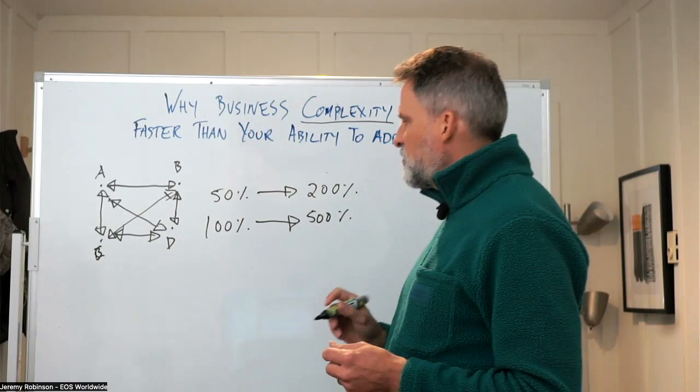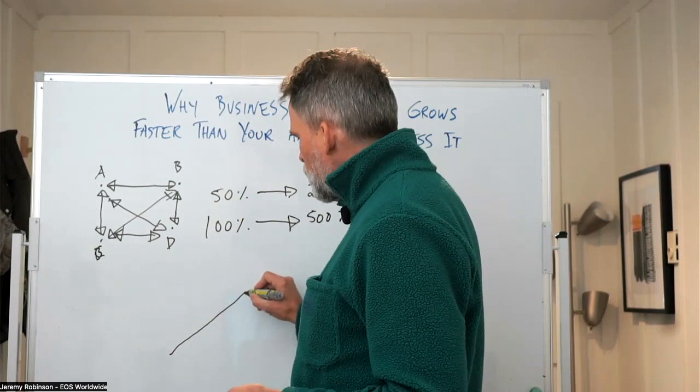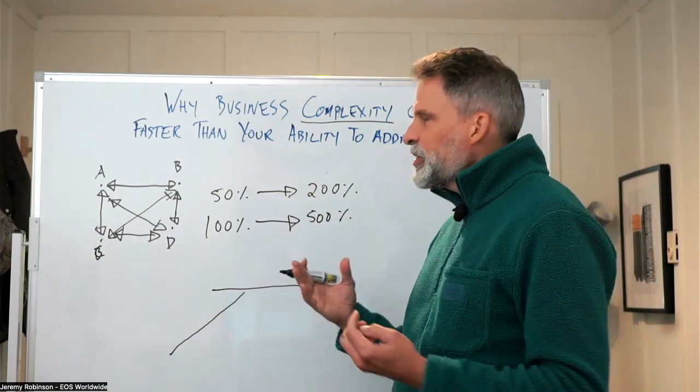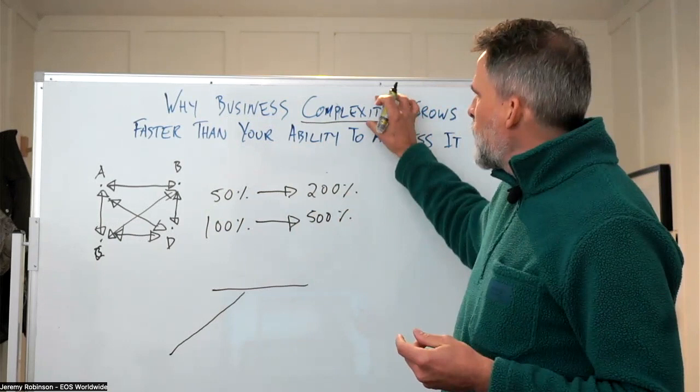And what this means is that eventually, as you're growing as an organization, you're going to hit a ceiling. We call this a ceiling of complexity. In other words, you can no longer progress as an organization until you address the complexity that has grown.